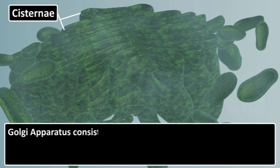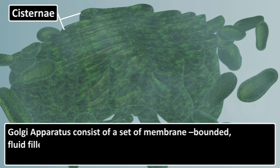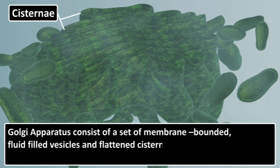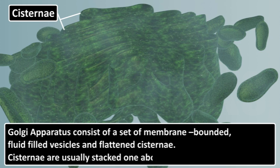Golgi Apparatus consists of a set of membrane-bound, fluid-filled vesicles and flattened cisternae. Cisternae are usually stacked one above the other in parallel rows.